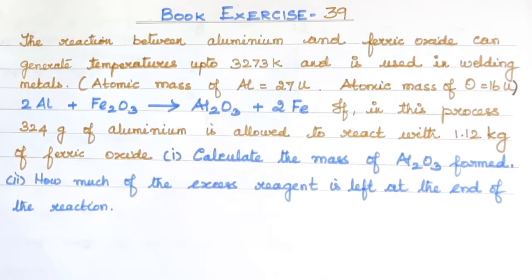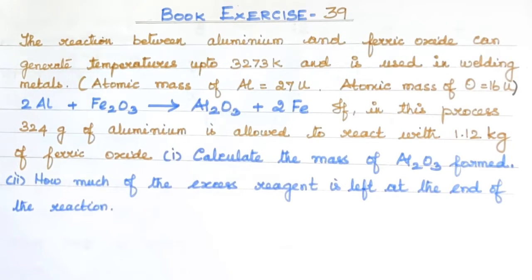The units differ — aluminium is in grams and Fe2O3 is in kilograms, so we need to convert: 1 kg equals 1000 grams. We need to identify the limiting reagent. As usual, let's work on the problem.